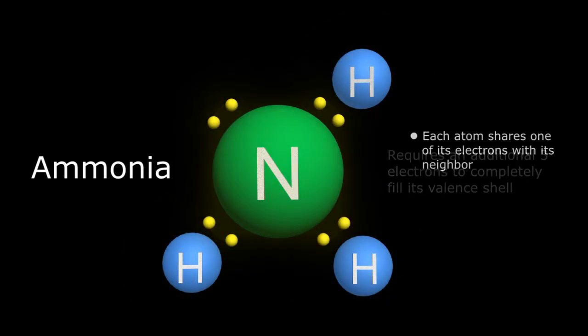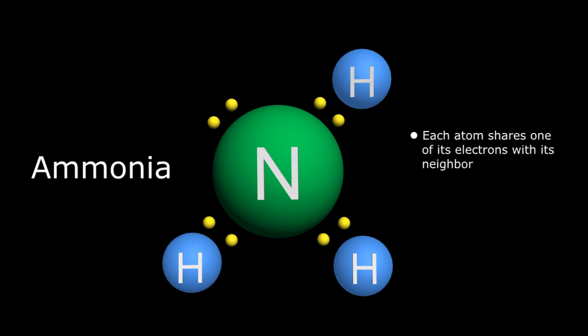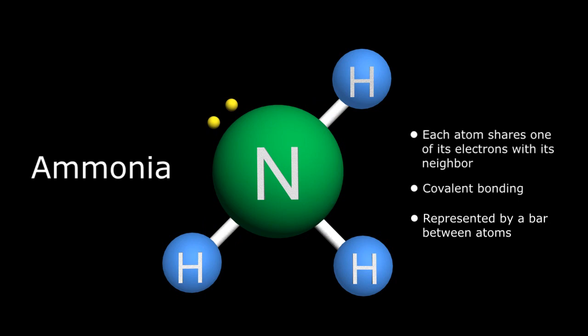Since each atom contributes one electron to share with its neighbor, this is called covalent bonding and is represented by a bar between the two atoms, indicating each atom's contribution to the bond.